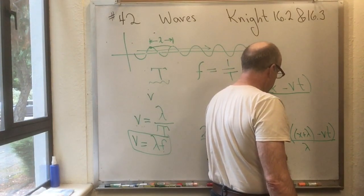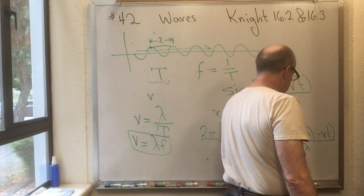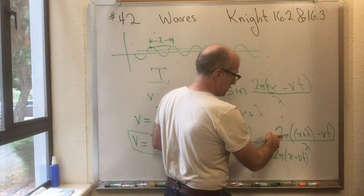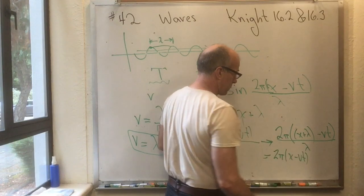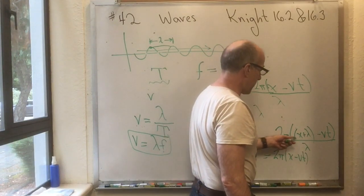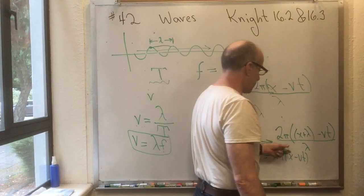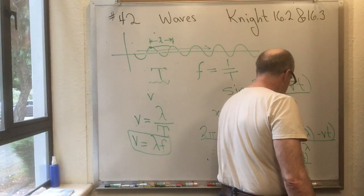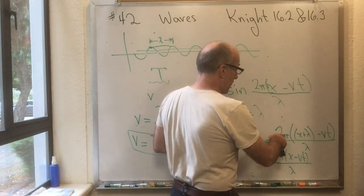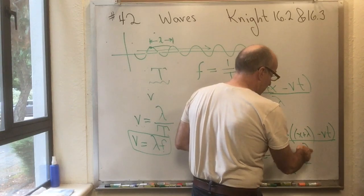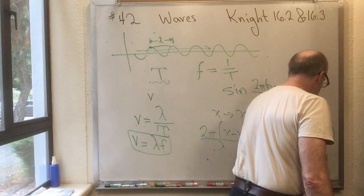Now, simplify that a little bit. That's equal to what I had before, which was 2 pi X minus VT. That's everything but the lambda term. So I have 2 pi X minus VT in the numerator, still have lambda in the denominator. And then I have 2 pi times lambda over lambda, so I have plus 2 pi.